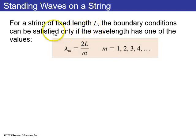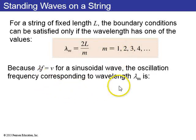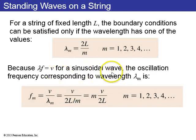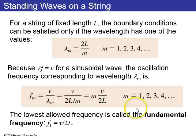For a string of fixed length L, boundary conditions are such that the wavelength of standing waves is 2L over M, where M is some integer. So if you have a sinusoidal wave with any of these wavelengths, then it can make a standing wave on this string. And this corresponds to frequencies. Since lambda times f is V, where V is the speed of waves in the string, you can solve for the frequencies of standing waves as being M times V over 2L. So the lowest allowed frequency is when M equals 1. That's just called the fundamental frequency V over 2L.